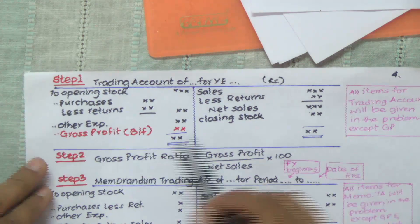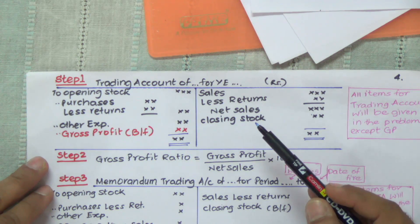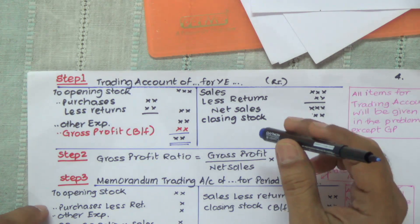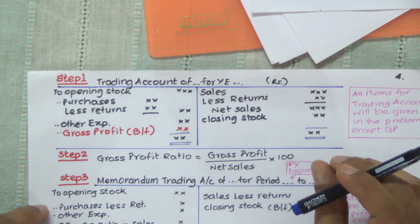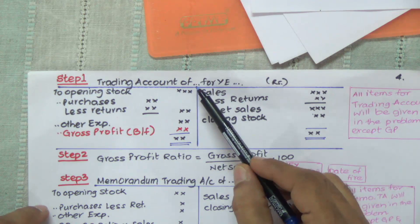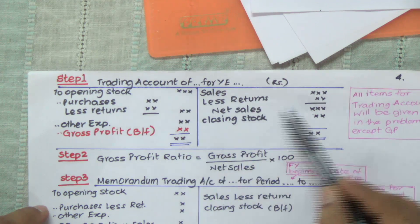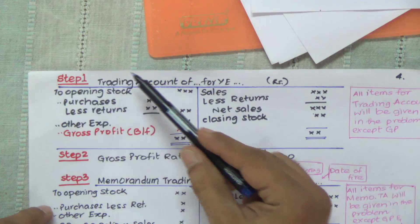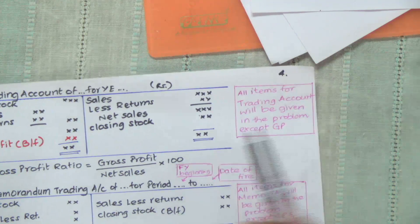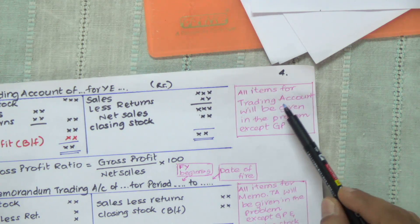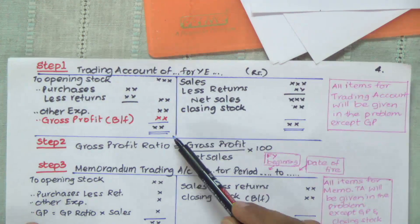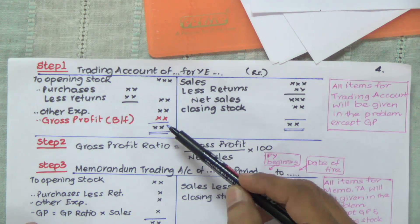This is a fixed template which we are comfortable with, and we carry on with it. All that we'll have to do in the problem is — the problem will not give the data in this template format, it will give it in some other fashion. So we'll have to pick up the data and fill it into this template. All that we'll be doing is filling in the name of the company, the year given in the problem, and these numbers. The particular part of the template is all fixed. It's only the numbers we are going to fill up based on the problem. All items for the trading account will be given in the problem, except the GP. So GP is the balancing figure.